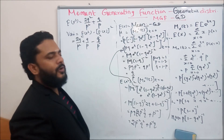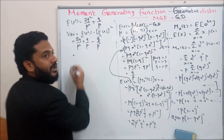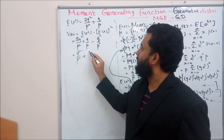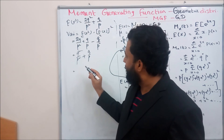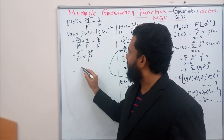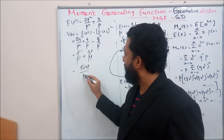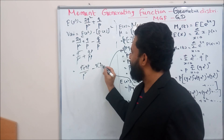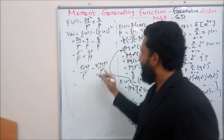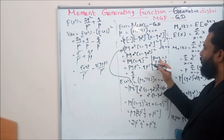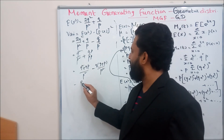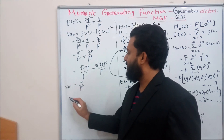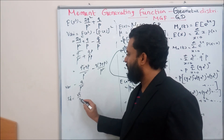The variance is E[X^2] - (E[X])^2 = (2q^2/p^2 + q/p) - (q/p)^2 = 2q^2/p^2 + q/p - q^2/p^2 = q^2/p^2 + q/p. Multiplying q/p by p/p gives (q^2 + qp)/p^2 = q(q+p)/p^2. Since q+p=1, the variance = q/p^2. The standard deviation is sqrt(q)/p.